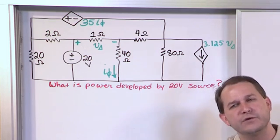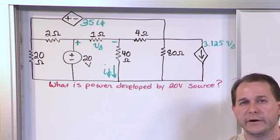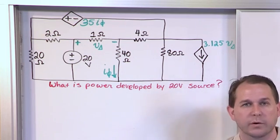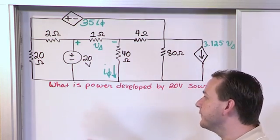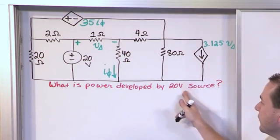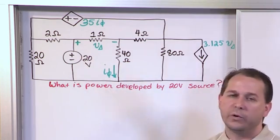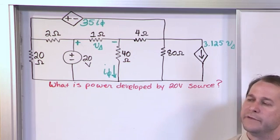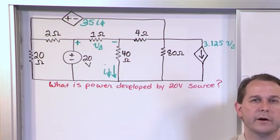So if you think you've really understood everything up to this point in the course, I encourage you to pause the video right now and just try to work this problem on your paper and then see if you can get the right answer. So we're trying to find what is the power developed by the 20 volt source. What's the power developed by the 20 volt source? And we're going to use the node voltage method to get there. So give it a shot if you want. Go ahead and pause the video.